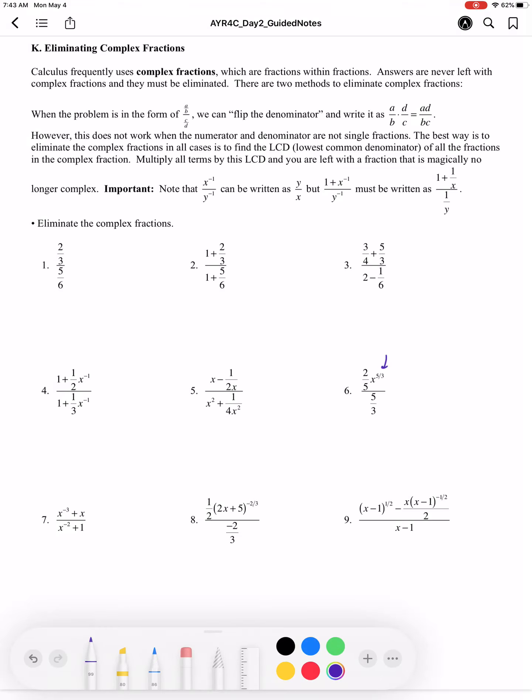Remember that x to the five-thirds is really the cubic root of x to the fifth, or we could simplify that into x times the cube root of x squared if we wanted to. So that's not the fraction we're going to simplify. We're going to leave x to the five-thirds as it is.